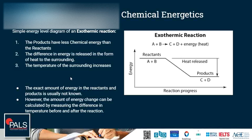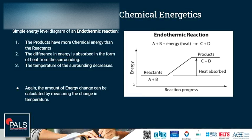There is no scale on the energy axis, so the exact amount of energy is not known. However, the amount of energy change can be calculated by measuring the difference in temperature before and after the reaction, knowing the amounts of reactants that have reacted. In an endothermic energy level diagram, the products have more chemical energy than the reactants; the difference in energy is absorbed as heat from the surrounding, and the temperature of the surrounding decreases.